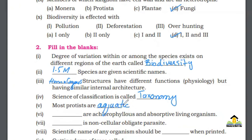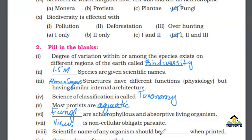Number 6: These are the smallest and simplest living organisms — Chloroplast and adaptive living organism. Number 7: This is a non-cellular obligate parasite — Virus. Scientific name of any organism should be italicized when printed.